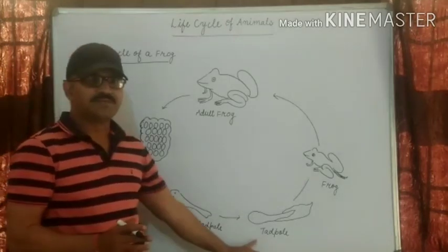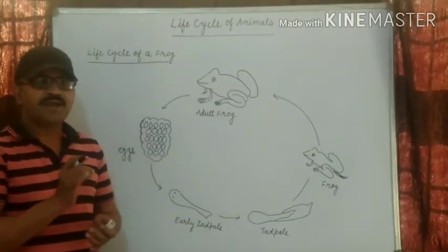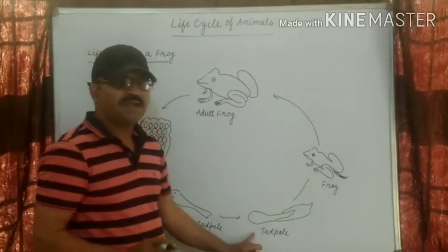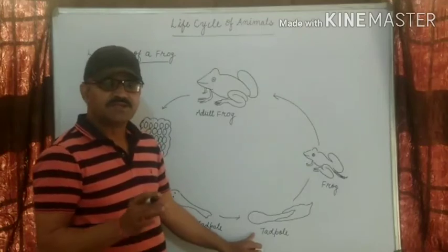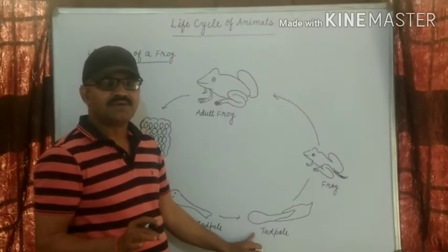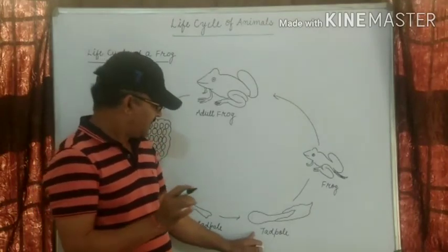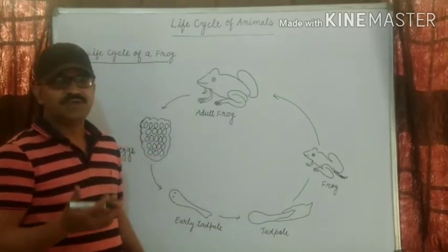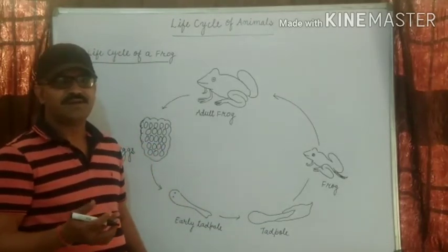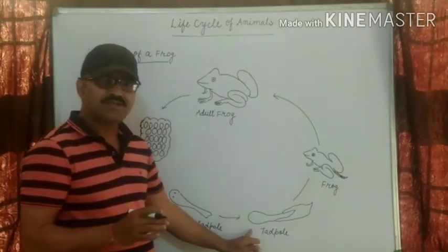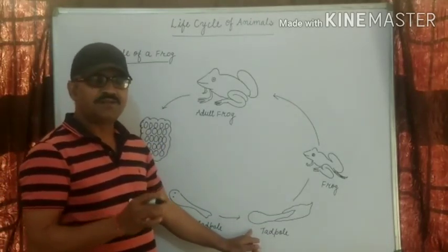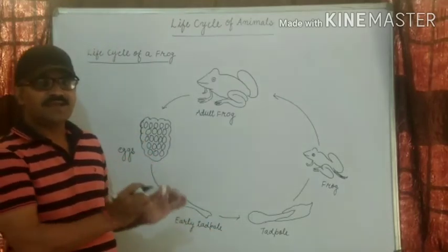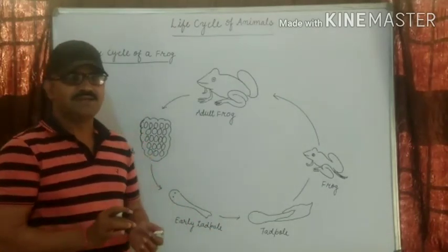They look like tiny fish and breathe through gills. Here they have gills, just like a fish. They do not have lungs to breathe; they have gills and breathe with the help of gills. They look like tiny fish.